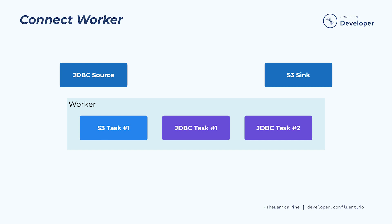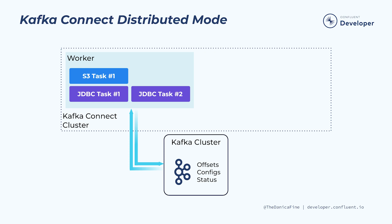A Kafka Connect worker can be run in one of two deployment methods: standalone or distributed. Each has its pros and cons, which we'll now discuss. The way in which you configure and operate Kafka Connect in these two modes is different. Despite its name, standalone mode is equally valid for a single worker deployed in a sandbox or development environment.